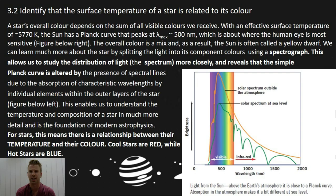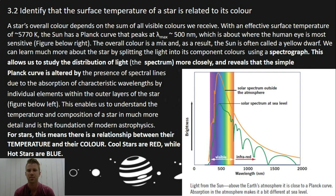A star's overall color depends on the sum of all visible colors we receive. With an effective surface temperature of approximately 5700 Kelvin, the star has a Planck curve that peaks at approximately 500 nanometers, which is about where the human eye is most sensitive. Look at the diagram on the right-hand side — the overall color is a mix, and as a result the Sun is called a yellow dwarf.